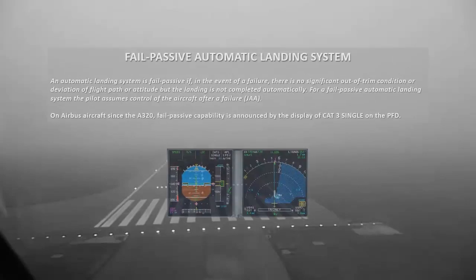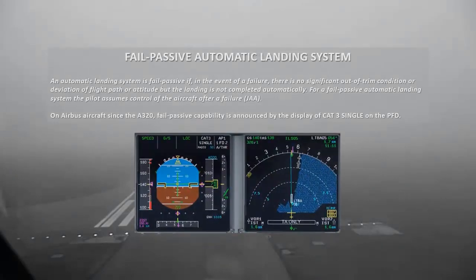Fail-passive automatic landing system: an automatic landing system is fail-passive if, in the event of a failure, there is no significant out-of-trim condition or deviation of flight path or attitude, but the landing is not completed automatically. For a fail-passive automatic landing system, the pilot assumes control of the aircraft after a failure (JAA). On Airbus aircraft since the A320, fail-passive capability is announced by the display of CAT 3 SINGLE on the PFD.